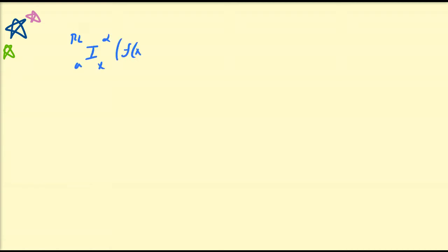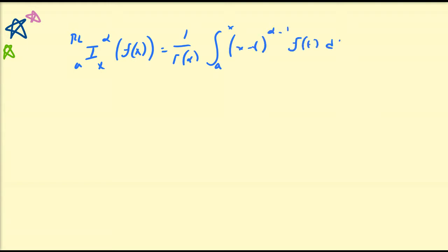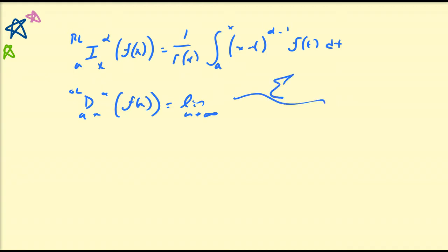Hello there. In the previous videos of Fractional Calculus, we have discussed primarily the Grünwald-Letnikov derivative and the Riemann-Liouville fractional integral. The Riemann-Liouville operator with base point a, of order alpha of some function f of x, is equal to 1 divided by gamma of alpha times the integral from a to x of x minus t to the alpha minus 1 times f of t dt. The Grünwald-Letnikov derivative with base point a of alpha of f of x is equal to the limit as n approaches infinity of a summation.